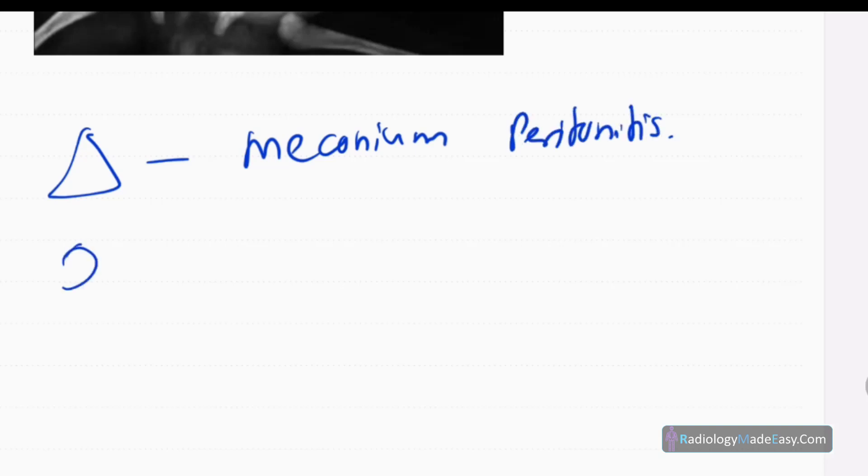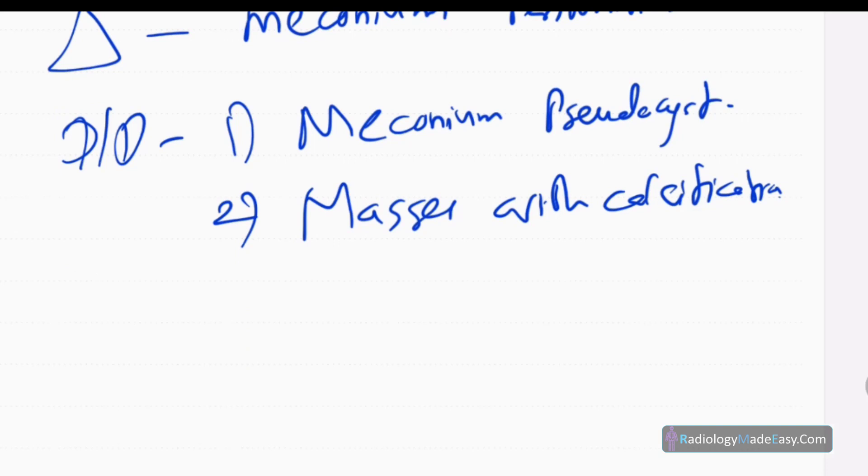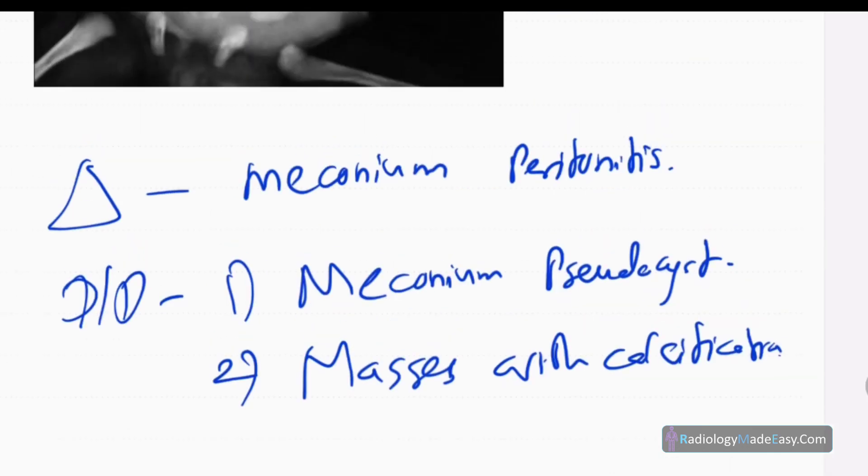Differential diagnosis for calcifications within the abdomen in a neonate or newborn: meconium pseudocyst, and calcified masses like neuroblastoma, nephroblastoma, hepatoblastoma, and also teratoma. Those are few differential diagnoses for calcified masses within the abdomen.